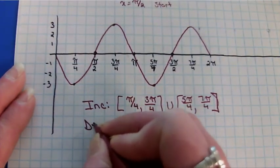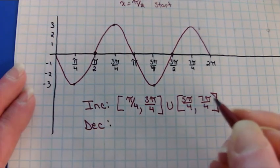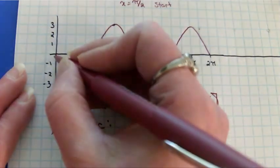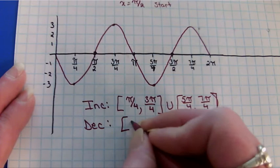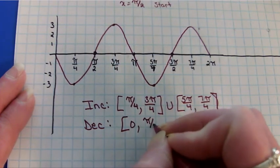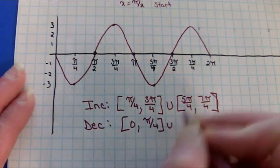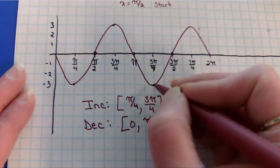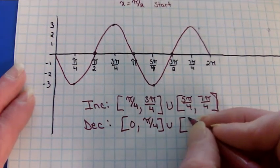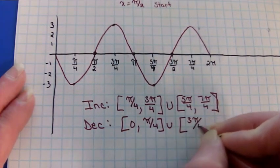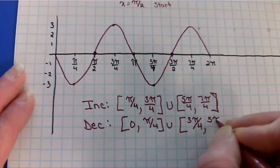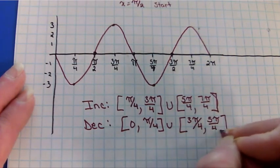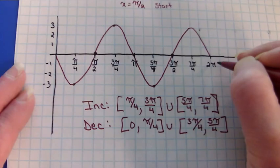When is it decreasing? Well, this is going downhill. So from 0 to π/4. Then again, 3π/4 to 5π/4. And then we have a last little leg that's going down.